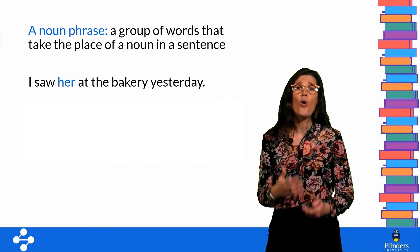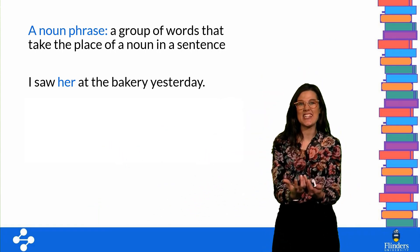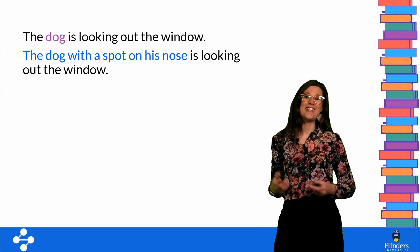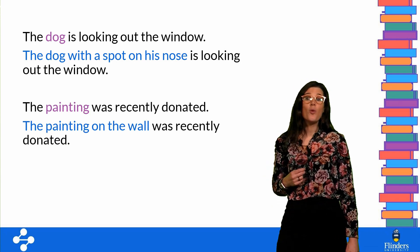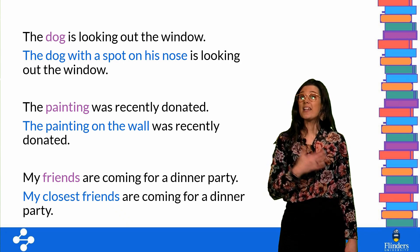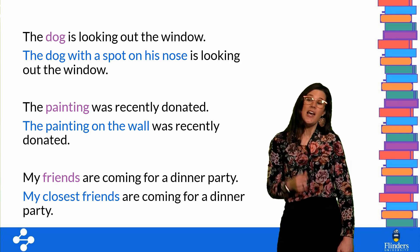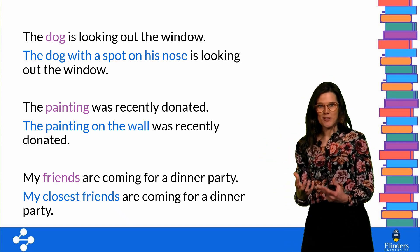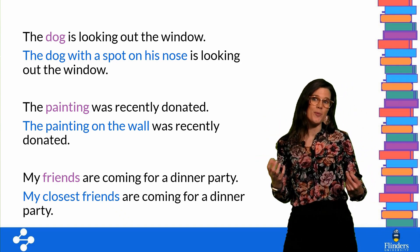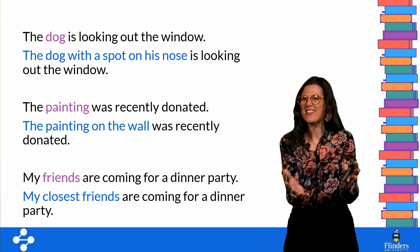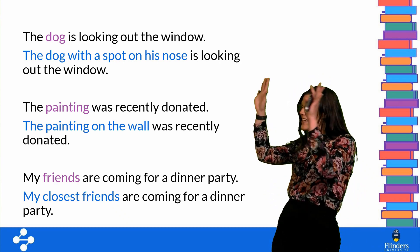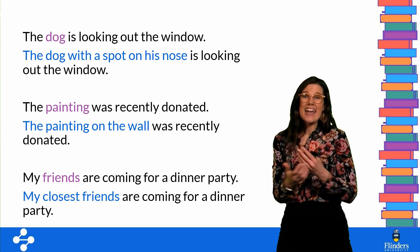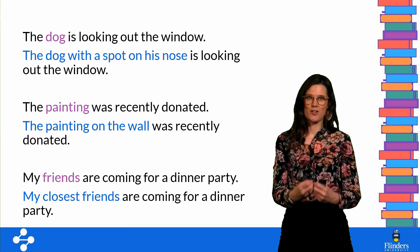We use noun phrases in English all the time to help us identify and distinguish and specify information. For example: 'the dog with a spot on his nose is looking out the window,' or 'the painting on the wall was recently donated,' or 'my closest friends are coming for a dinner party.' These phrases in blue are noun phrases — far more descriptive than the singular nouns in purple. I know exactly which dog, which painting, and which friends.